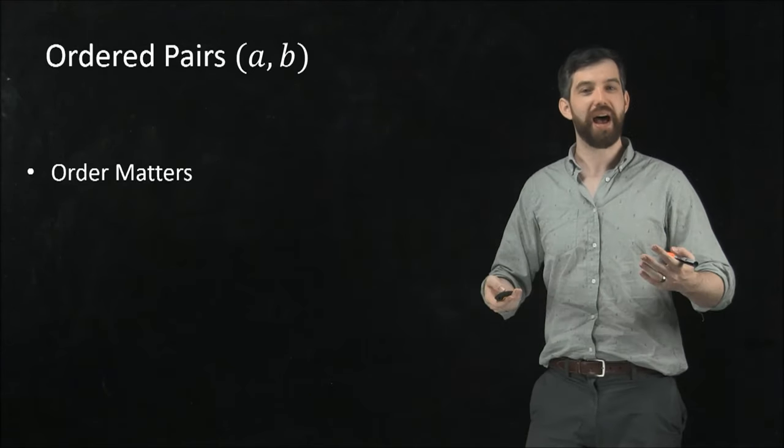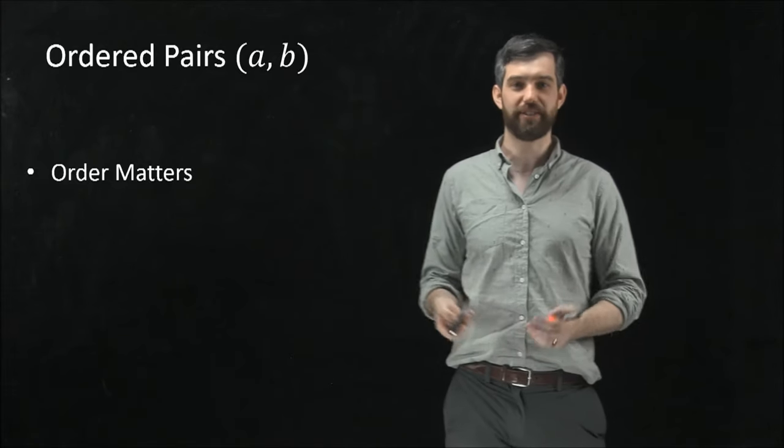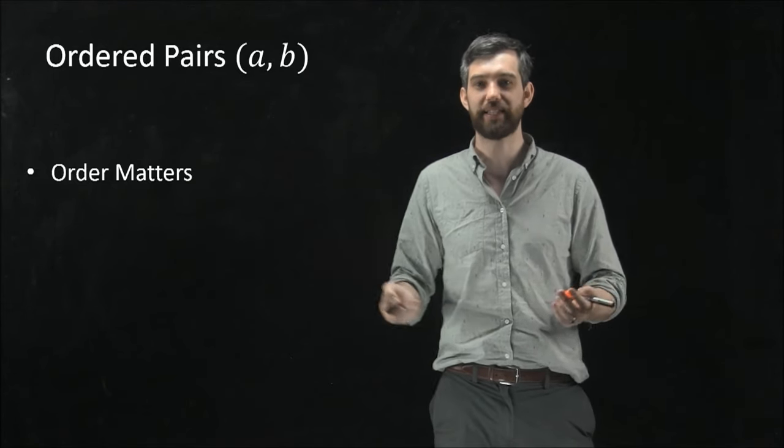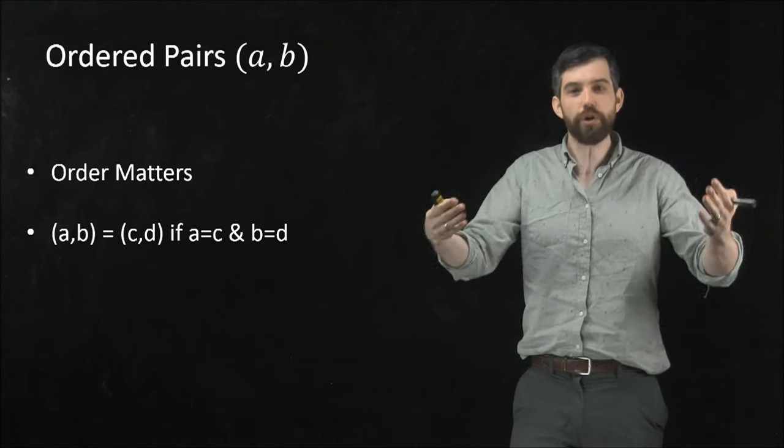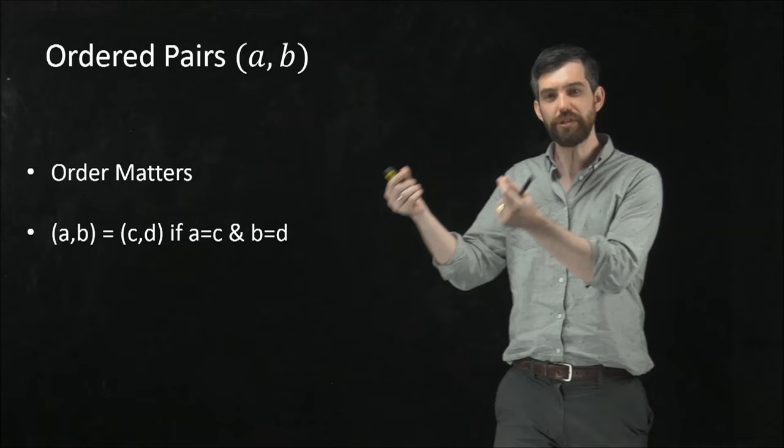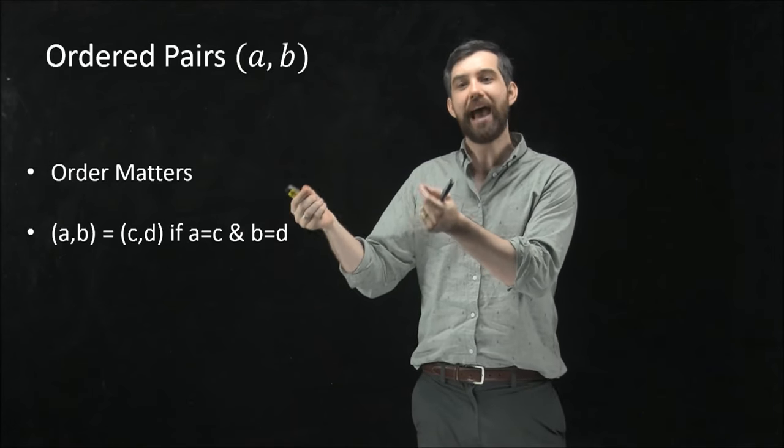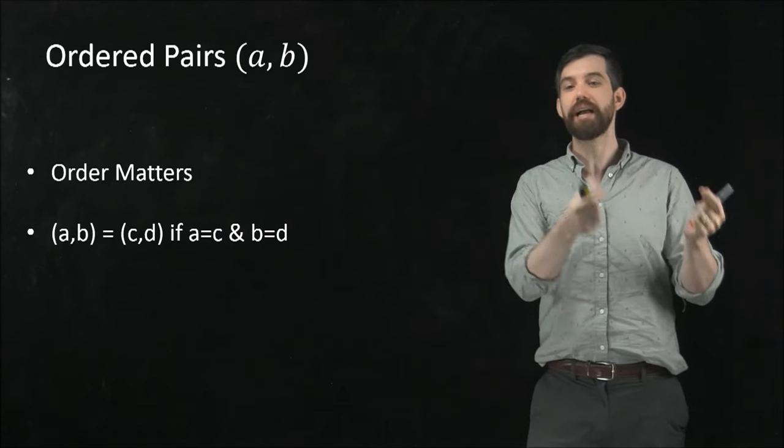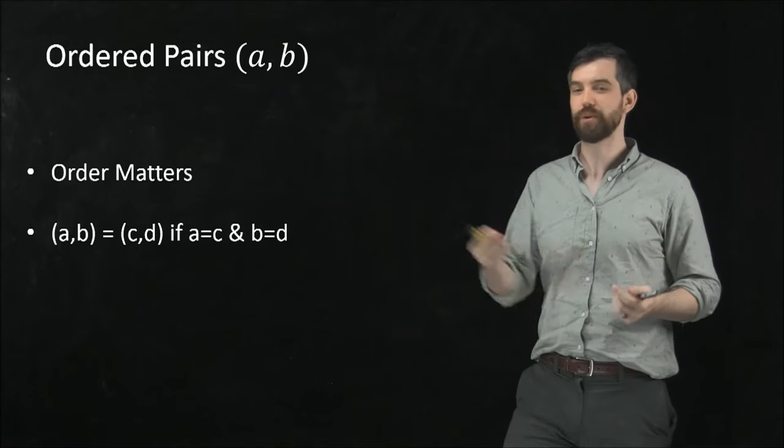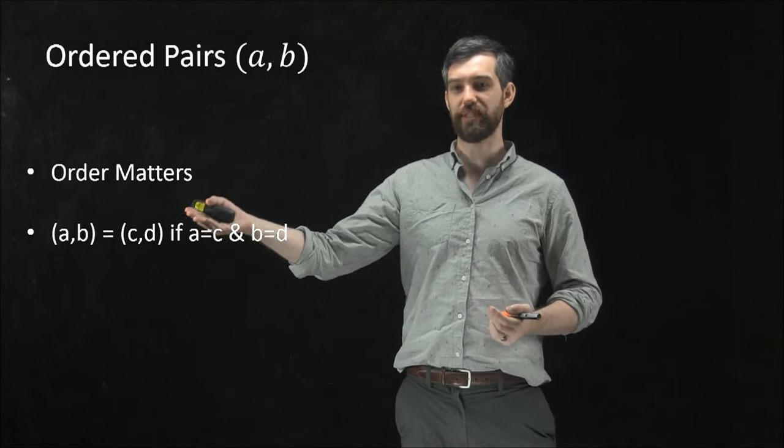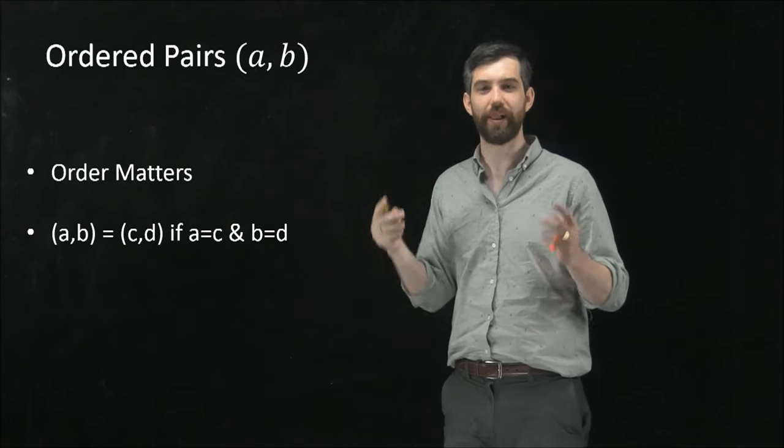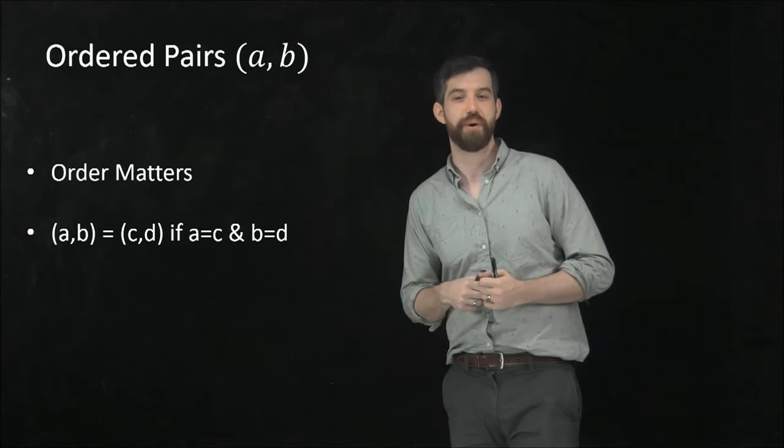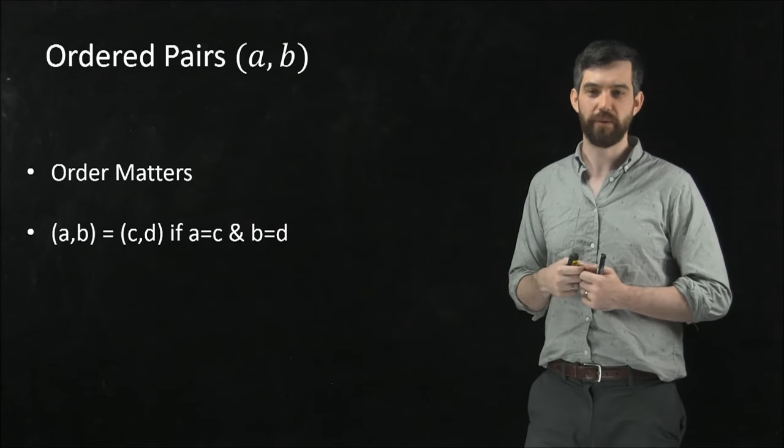And then I can have a notion of equality of ordered pairs. The ordered pairs are going to be equal if it has the property that the first two components are equal and the second two components are equal. In other words, we're saying AB is equal to CD if the first two components, that's the A and the C, those are equal and the second of the two components, the B and the D, those are going to be equal.